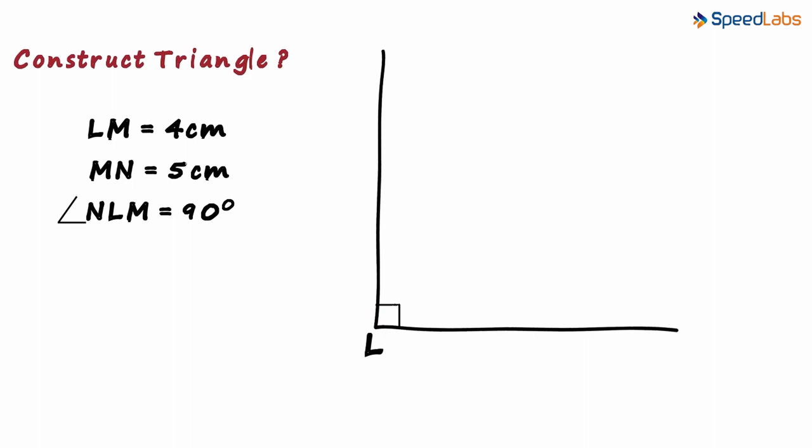How do we form the triangle now? We are given the length of side LM as 4 centimetres. Let LM be the base. So we mark LM here as 4 centimetres.